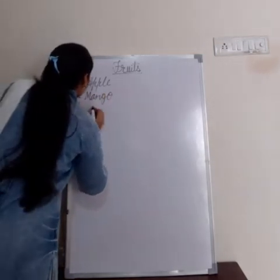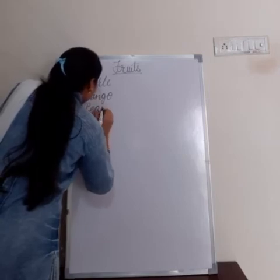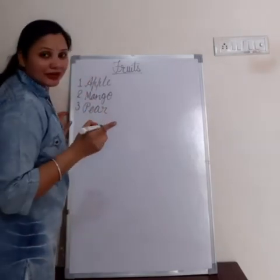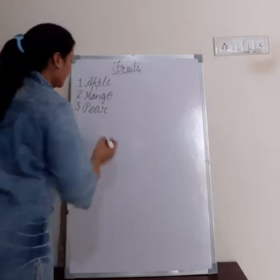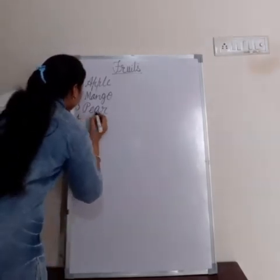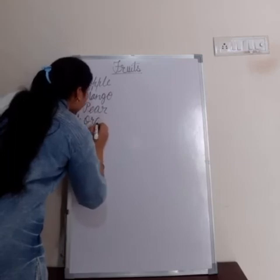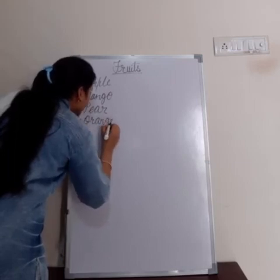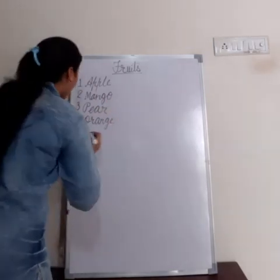Number three. P-E-A-R, pear. Pear means naashpati. Number four. O-R-A-N-G-E, orange. Orange means santra.